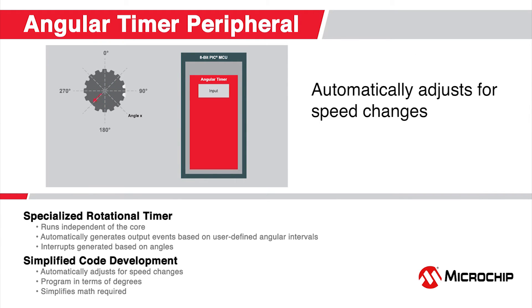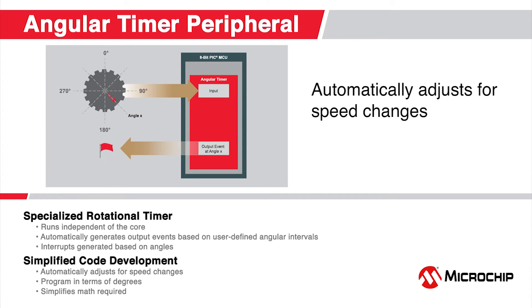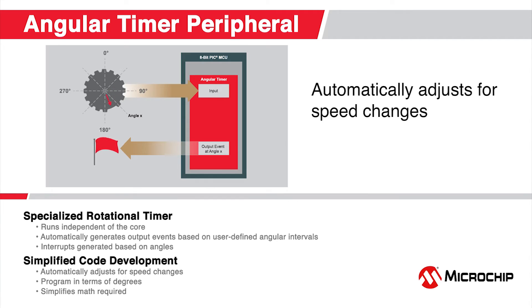The Angular Timer offers a latency-free way to generate output events directly based on a user-defined resolution that subdivides a periodic signal. This peripheral is also able to make dynamic adjustments to maintain the output signal relative to input signal frequency changes without CPU intervention.